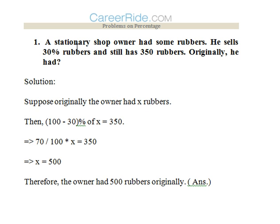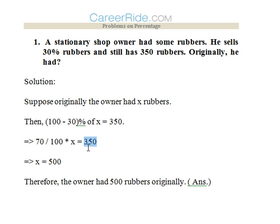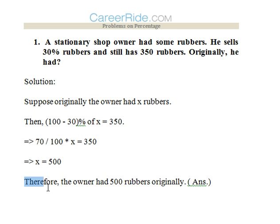The stationary shop owner sold 30% rubbers and is left with 70% rubbers, and the number given is that he is left with 350 rubbers. So 70% of total rubbers is equal to 350 rubbers. That is, (100 - 30)% of x = 350, so 70% of x = 350. We get x = 500. Therefore the owner had 500 rubbers originally.